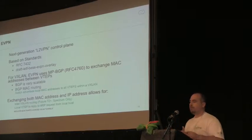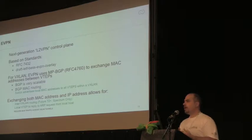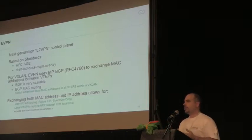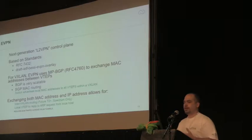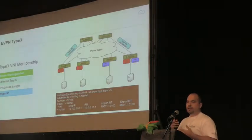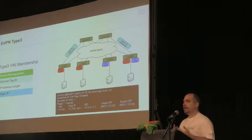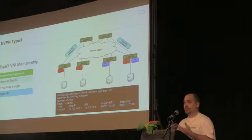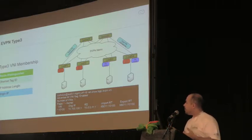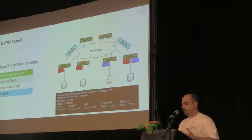EVPN changes that. What EVPN does is build your overlay network based on BGP. A lot of data center routing is built on BGP these days, so you take advantage of an additional address family in BGP to distribute your MAC addressing and routing information. There are several types of routes — one is the Type 3 announcement, which announces which VNIs you're interested in. You only want to forward traffic to nodes that actually have that VNI configured.